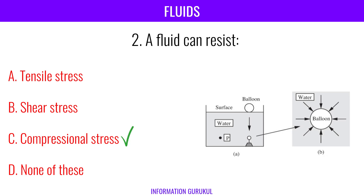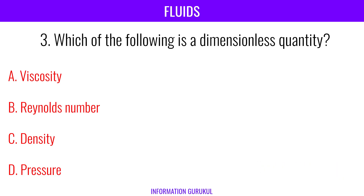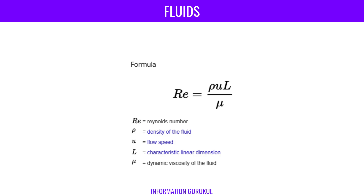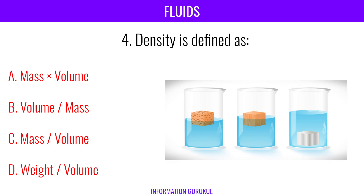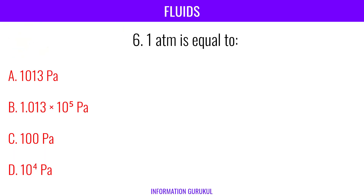Compressive stress is a force that pushes inward on a material, causing it to deform and potentially reduce its volume. Which of the following is a dimensionless quantity? Reynolds number. Density is defined as mass by volume. The SI unit of pressure is Pascal. One atmosphere is equal to 1.013 × 10⁵ Pascal.